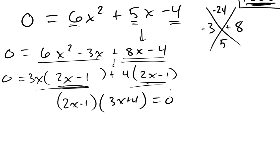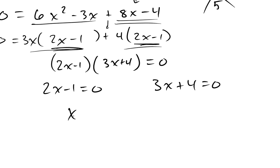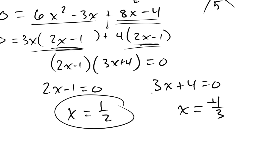Because this equals 0, I set each part equal to 0 — this is called the zero product property. So 2x minus 1 equals 0, which gives x equals positive 1 half. And the other factor gives x equals negative 4 thirds. So my two solutions to this problem are x equals 1 half and x equals negative 4 thirds.